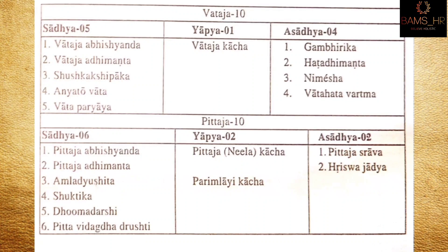In vataja netrarugas there are 10 total. Sadhya are 5: vataja vishandhya, vataja adhimantha, shushka akshipaka, ananya vartma, and vartapariyaya. Yapya 1: vataja kacha. Asadhya are: gambhirika, hatadhimantha, nimeshya, and vatavartma.